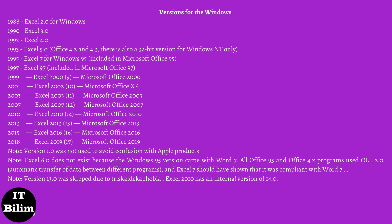Excel 2000, also known as Excel 9, was introduced in June 1999. This version was characterized by minor enhancements. An important advantage of the new version was the ability to use HTML as a universal file format. Excel 2000 also supported the standard binary file format compatible with Excel 97.